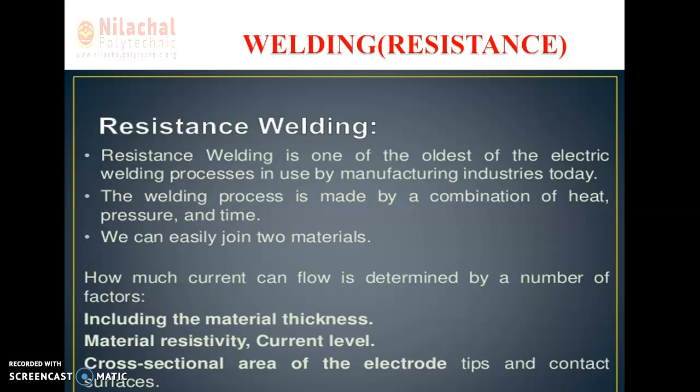How much current can flow is determined by a number of factors. These include: the material thickness — that means the thickness of the material we want to join; material resistivity — how much resistivity the material has; the current level; and the cross-sectional area of the electrode tips and contact surface. These are the factors which play a vital role in the resistance welding process.